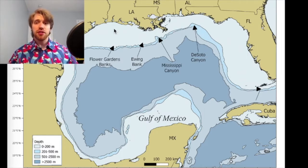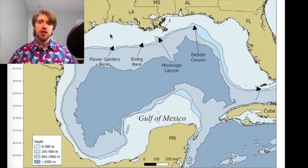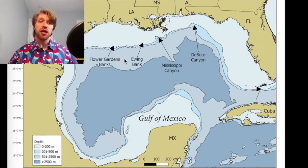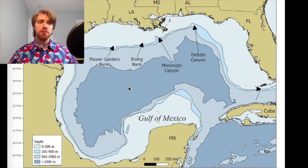The continental shelf, here in light blue, is between 0 and 200 meters deep. This thin strip of darker blue is the continental shelf edge, and is between 200 and 500 meters deep. The gray area is called the continental slope, and it is defined as a region between 500 and 2,500 meters deep. This dark blue region in the middle is open ocean, and it is any depth below 2,500 meters.